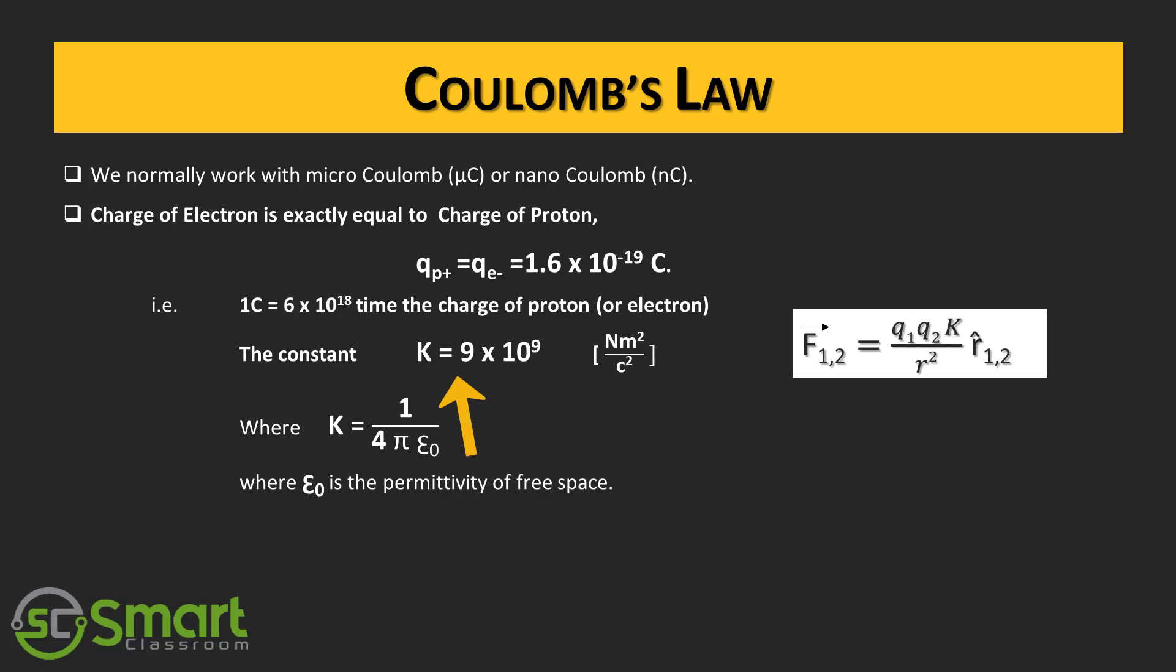The coulomb constant k equals 9 into 10 to the power 9 newton meter square per coulomb square, where k equals 1 divided by 4 pi epsilon 0, where epsilon 0 is the permittivity of free space.